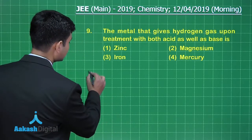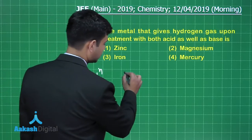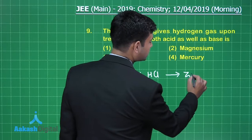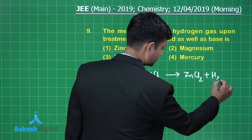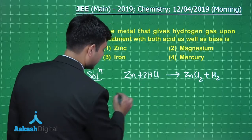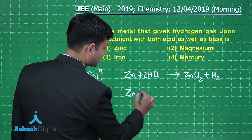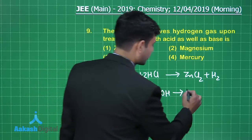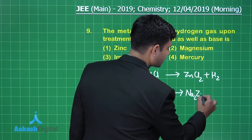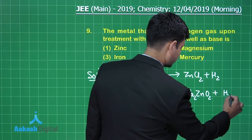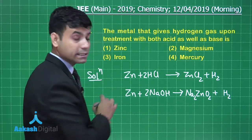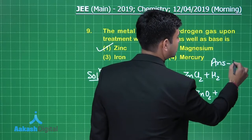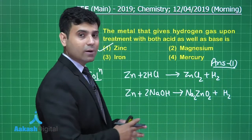Let's write the reactions: Zn + HCl → ZnCl₂ + H₂ (balanced), and Zn + NaOH → Na₂ZnO₂ (sodium zincate) + H₂. So the correct answer for this question is option 1, zinc.